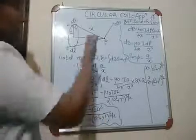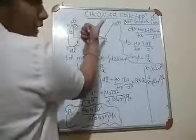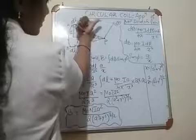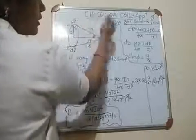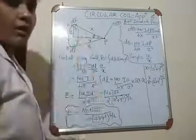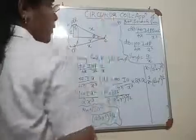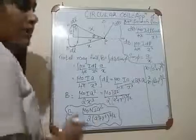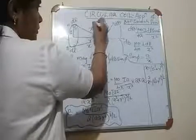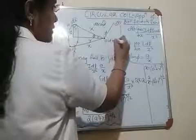This magnetic field needs to be resolved into two mutually perpendicular components. If this angle is phi, then by geometry this angle is also phi. One component will be DB·cosφ, as that is the component adjacent to phi, and the other component will be DB·sinφ.